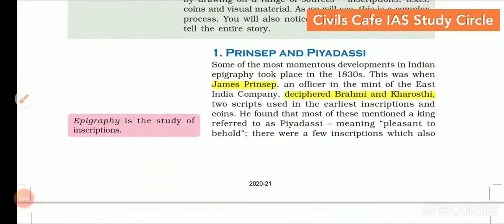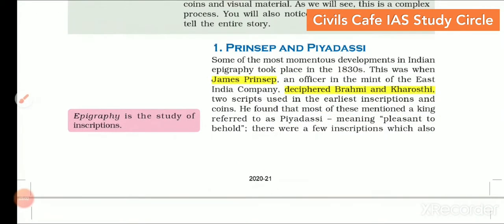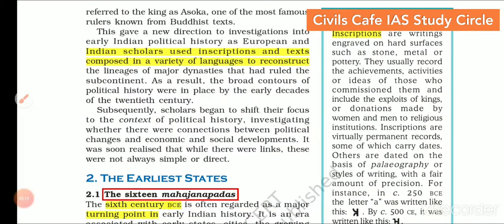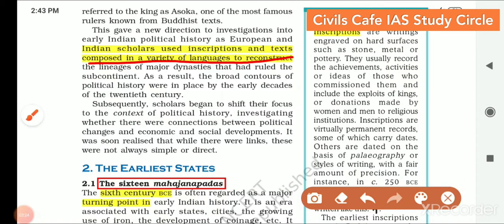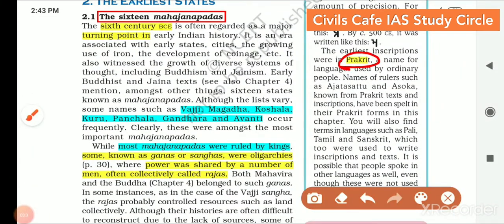The unit starts with a discussion on James Prinsep. He was the one who deciphered the Brahmi and Kharosthi scripts. These scripts were used by Ashoka in his inscriptions, and that is how he deciphered the word 'Piyadasi,' which means 'pleasant to behold.' James Prinsep was an officer of the East India Company who deciphered Brahmi and Kharosthi scripts. This decipherment led to many intellectual developments. Indian scholars used inscriptions and texts composed in a variety of languages to reconstruct India's past. The earliest inscriptions were made in Prakrit language so that ordinary people could understand them.